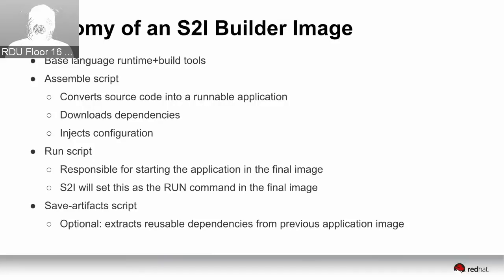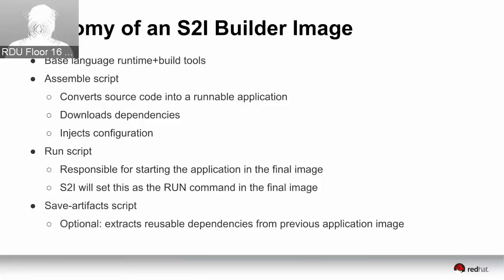There's an optional save-artifacts script for iterative development. If you pull down a bunch of Maven dependencies during your build, those exist in the application image. The next time you build, rather than starting from the base builder image without those dependencies, we can pull the Maven dependencies from the previous version of your application image and reuse them so we don't have to pull them from the internet. The save-artifacts script picks the files and paths from the application image to reuse in future builds — improving performance of what we call an incremental build.